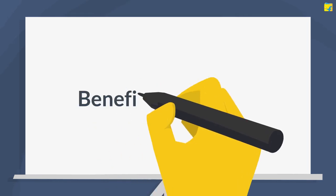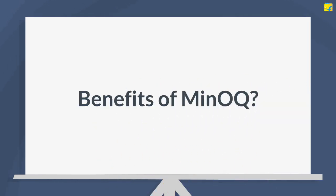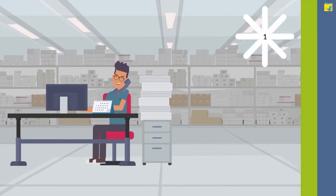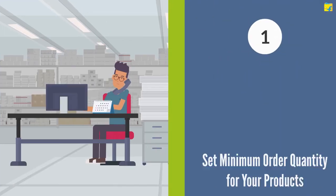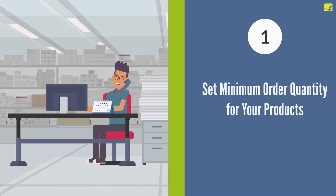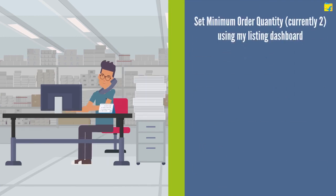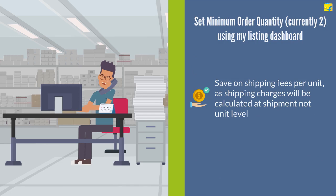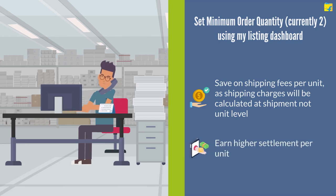Let's take a look at the benefits of the Minocube feature. You can set a Minimum Order Quantity currently too for your products using My Listing Dashboard. This will help you save on shipping fees per unit, as the shipping charge will be calculated at shipment level and not unit level. Thereby, you earn higher settlement per unit.